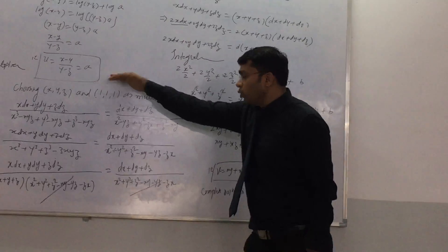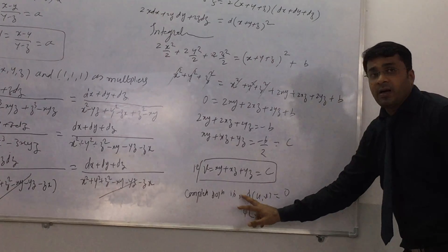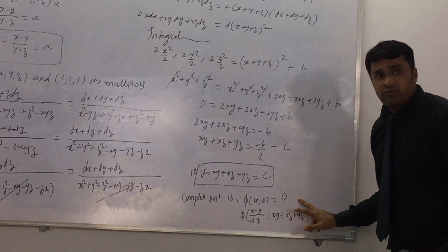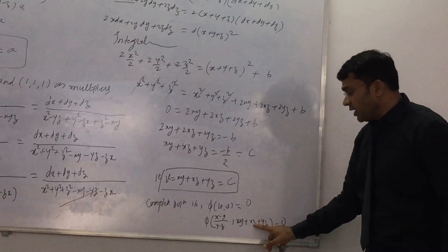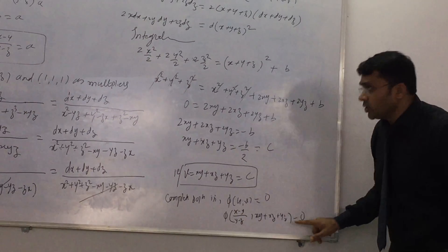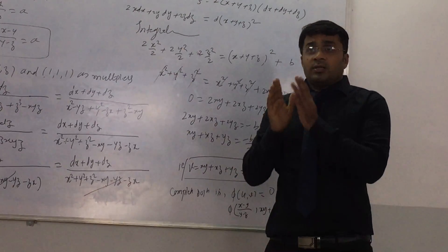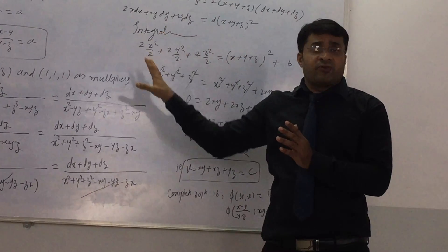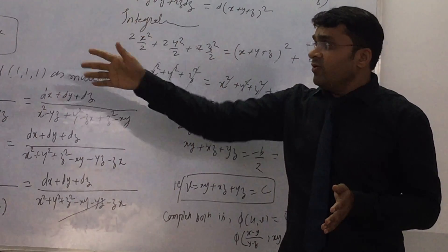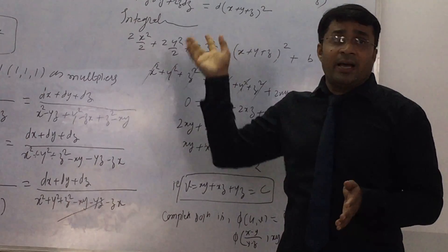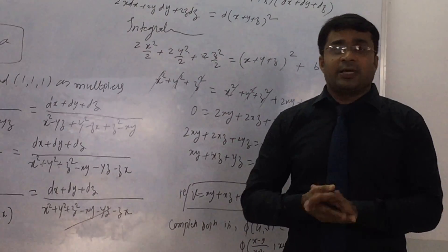We obtained two solutions: u equals x minus y over y minus z, and v equals xy plus xz plus yz. The complete solution is given by phi of u, v equals 0. This is the only way to solve this differential equation; using multiplier method by selecting the appropriate multipliers to apply. Thank you.